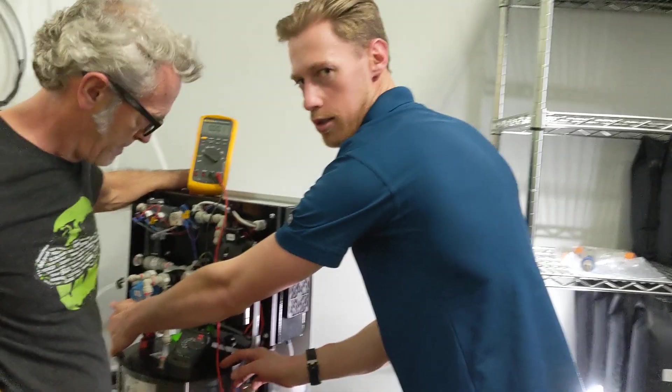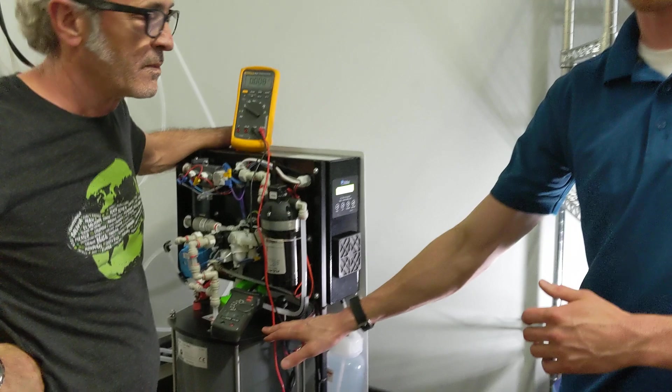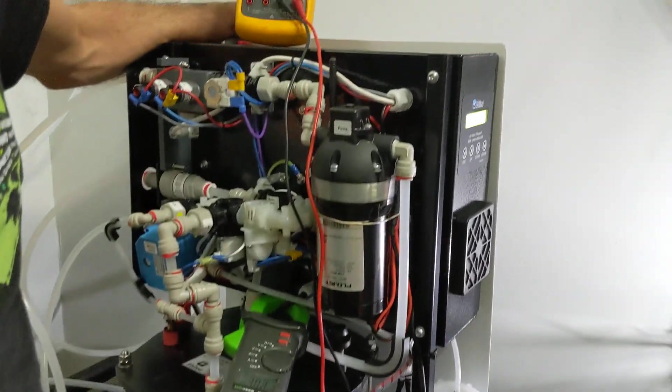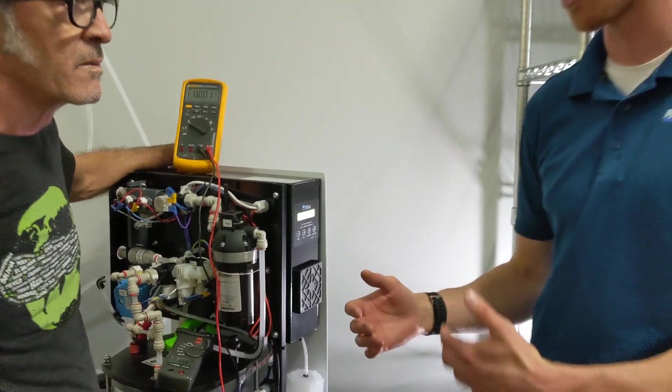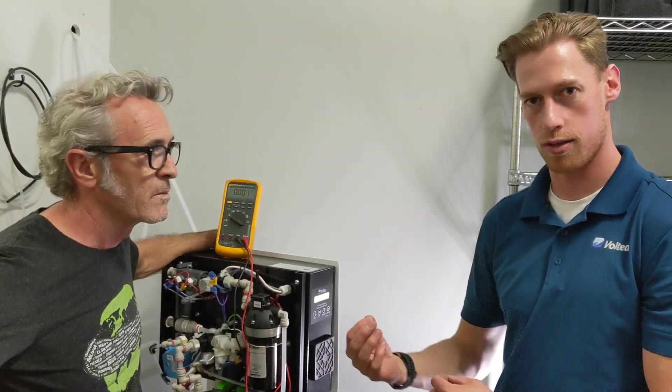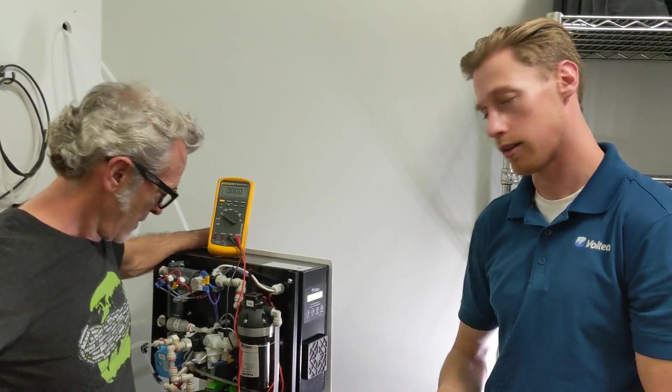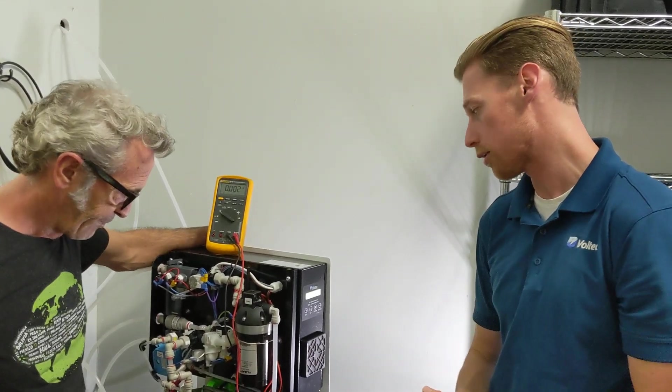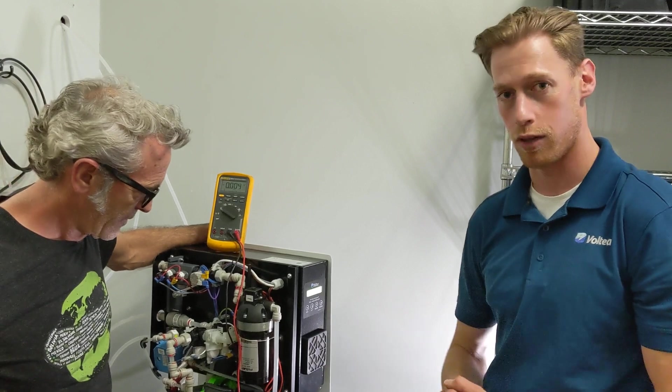Essentially what we're doing is we're running a very small amount of electricity across this module to positively charge one layer of electrodes and negatively charge the opposite layer of electrodes. By flowing water through those cells, we can pull that salt out, or that conductivity, or TDS, out of the water and give that perfect quality water.